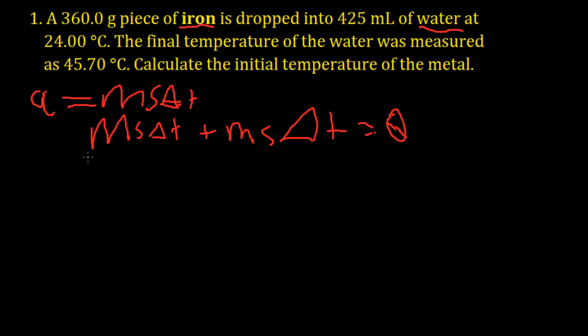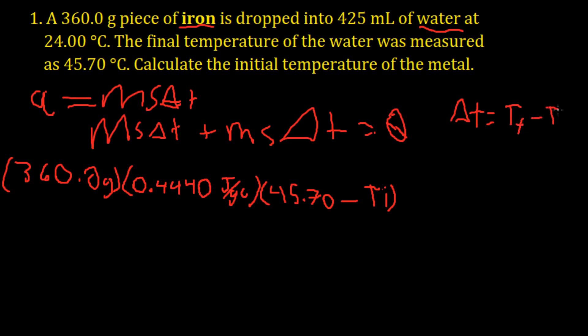So first let's do our iron for the first ms delta t. The mass is 360.0 grams. The specific heat, which was given to me in a packet of problems for my chemistry class, is 0.4440 joules over grams Celsius. And then the change in temperature: the final temperature was 45.70. However we are still looking for the initial temperature and that's what we will be calculating. Remember that delta t equals the final temperature minus the initial temperature.